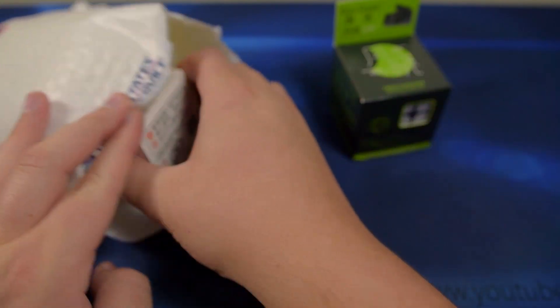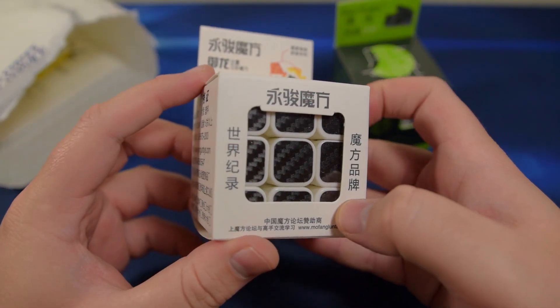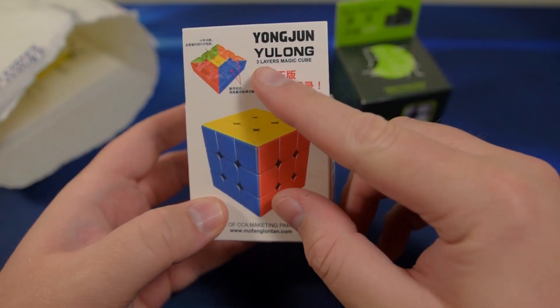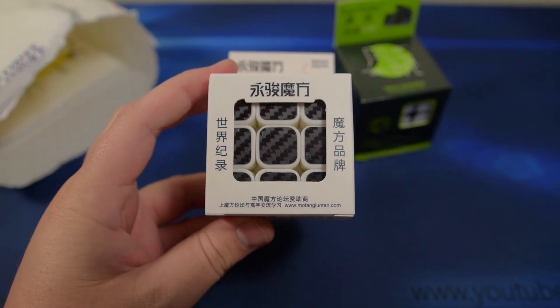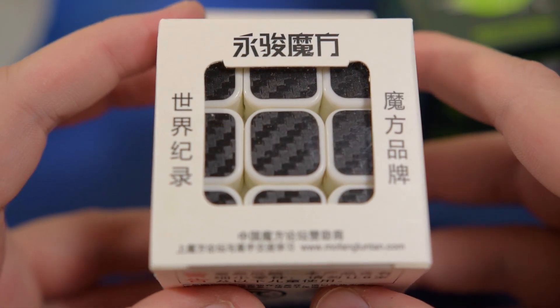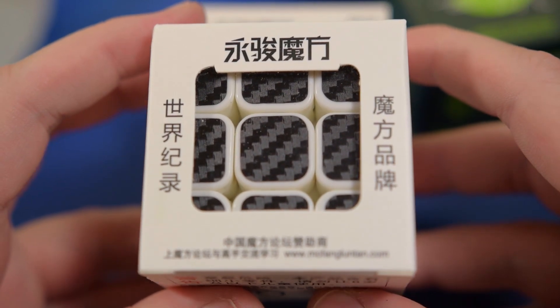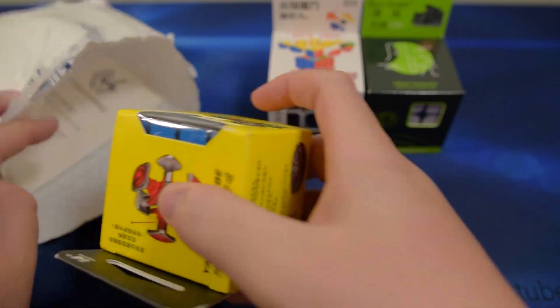Let's see here, what else is this? This is actually a YJ Yulong, which I've never tried, but this one looks pretty cool. Check this out, it looks like the stickers are textured like a carbon fiber style texture or something like that. That's pretty cool.